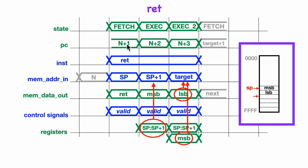We also just use the defaults to allow the program counter to be incremented during these two cycles, although it doesn't really matter what's there since we don't use the program counter in those cycles.